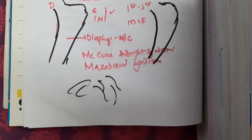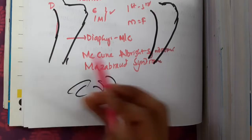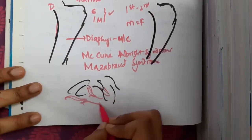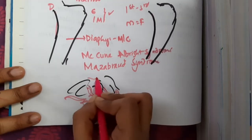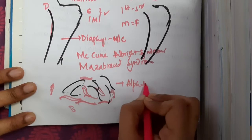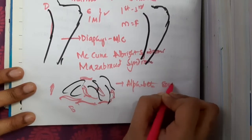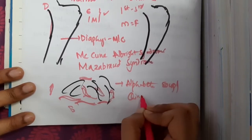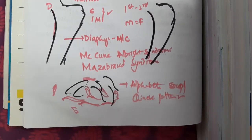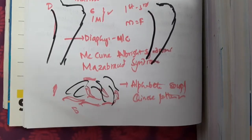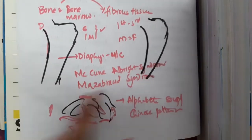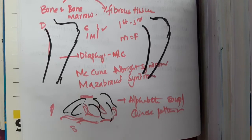Histologically, fibrous dysplasia shows irregular bony fragments with fibroblasts in between. The fibrous arrangement appears as an 'alphabet soup' or 'Chinese pattern.' This Chinese pattern appearance is also seen in Corynebacterium. On X-ray, you will see the shepherd's crook deformity.